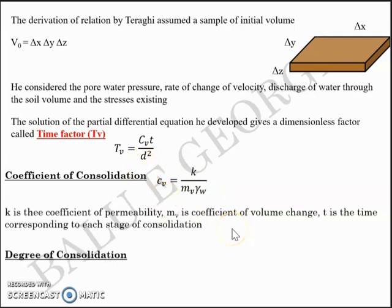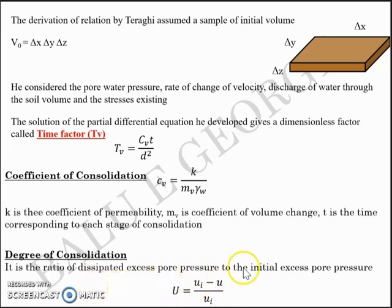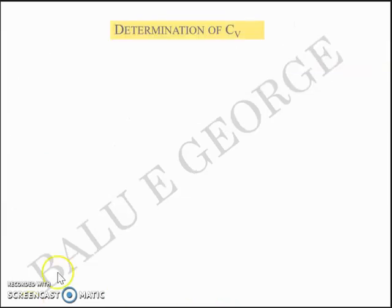The degree of consolidation U is the ratio of dissipated excess pore pressure to the initial excess pore pressure: U = (ui − u) / ui. The coefficient of consolidation cv can be determined from laboratory readings using two different methods.